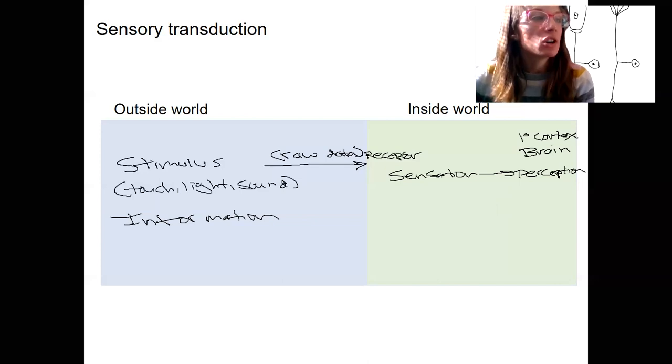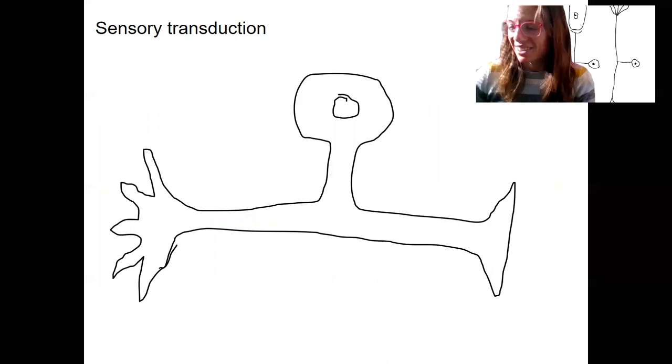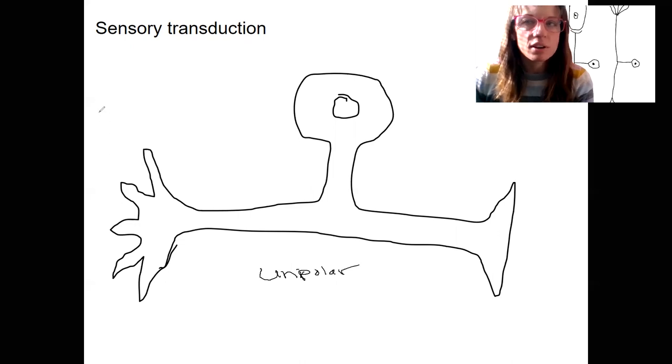So let's talk about how this is going to happen. So this is a sensory neuron. Obviously, here is our unipolar. We're going to see some sensory neurons that are bipolar. This one is unipolar. So we're going to have a stimuli come in from out here somewhere. So here we're going to have a stimulus.